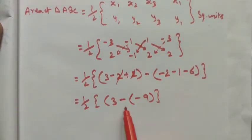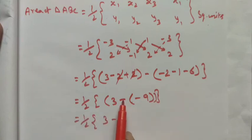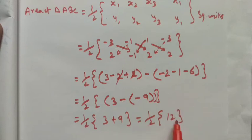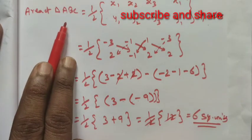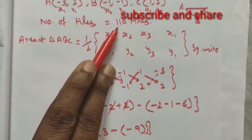Now remove the bracket: 1/2 into (3 minus (−9)). Removing the bracket, minus into minus gives plus 9. So the expression becomes half into 12. Dividing: 1/2 × 12 = 6 square units. This is the area of triangle ABC — the area of one tile.